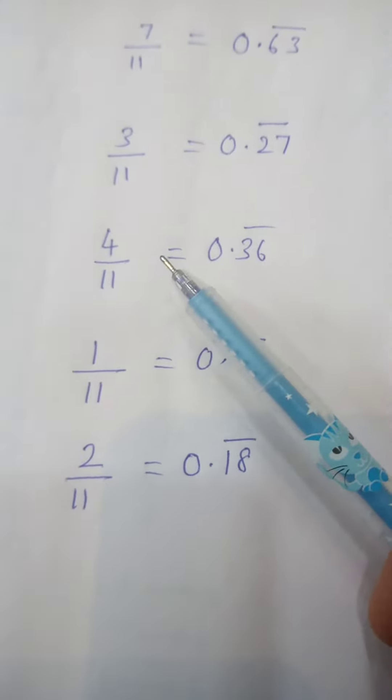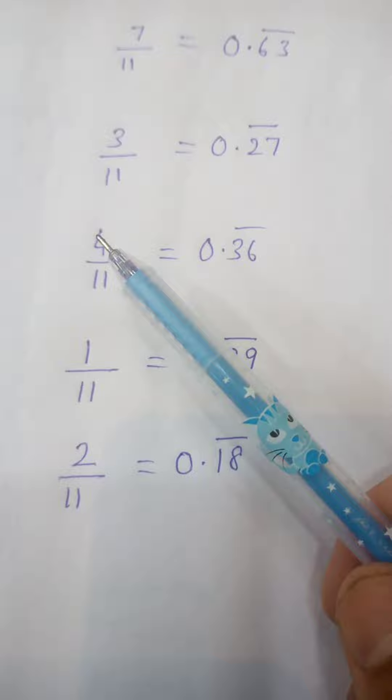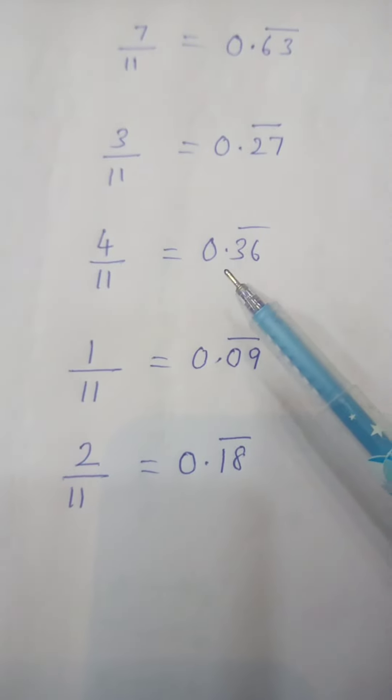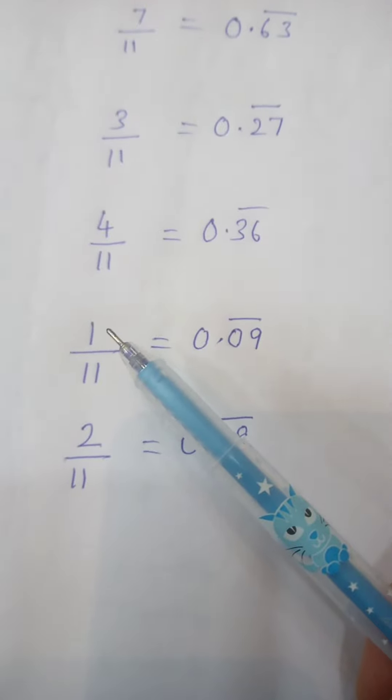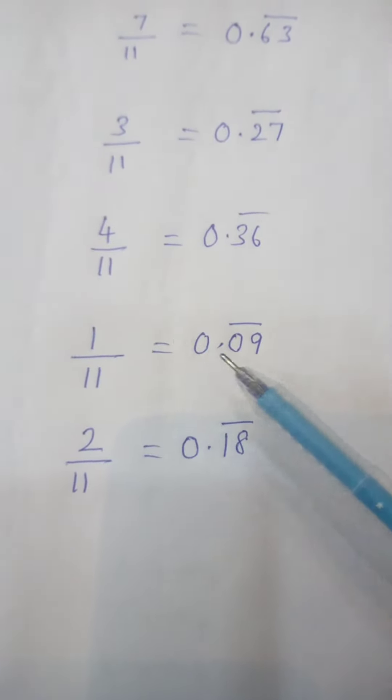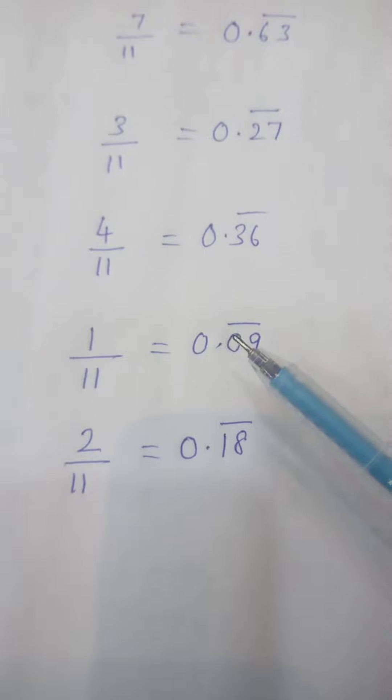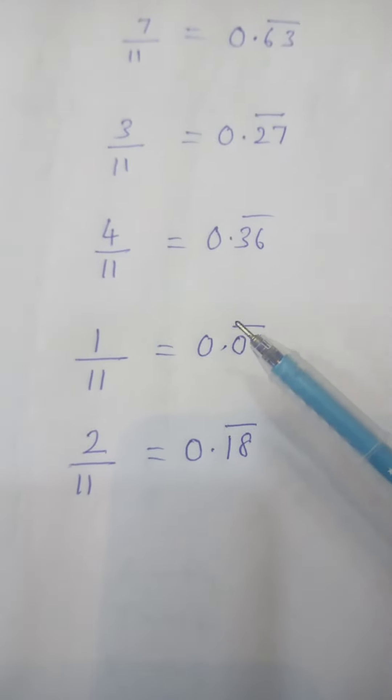4 divided by 11. Multiply 9 with 4. 9 times 4 is 36, so it is 0.36 bar. For 1 divided by 11, you have to multiply with 9. 9 times 1 is 9. Since 9 is a single digit, you have to write 0.09 and then put a bar.